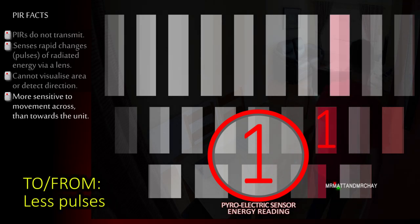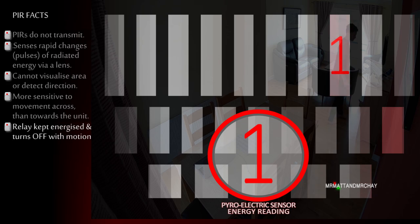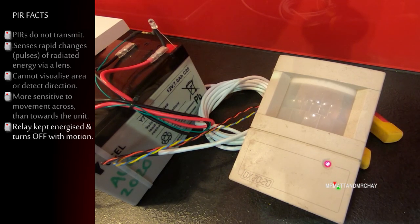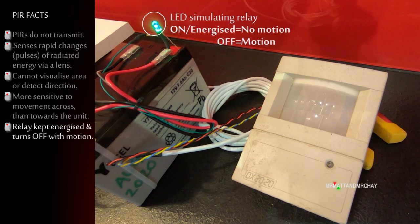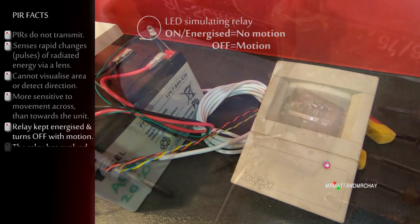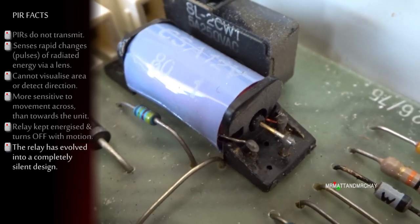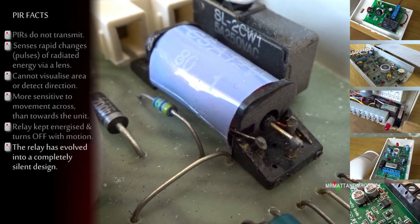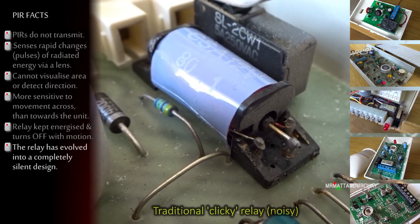The output relay is kept energized until motion is detected. A power loss or disconnection of power results in a continuous alarm output. Over the years, the clicky relay that signals motion to the control panel has evolved into a completely silent design.